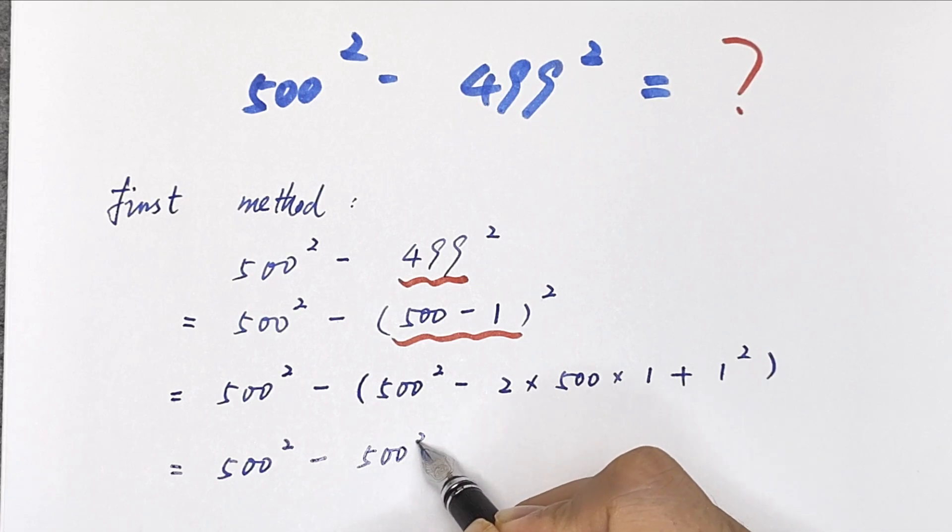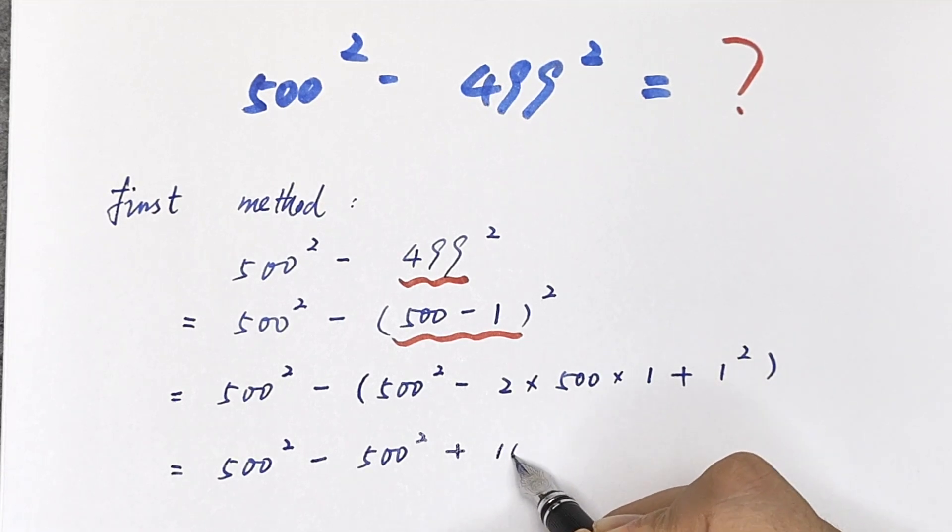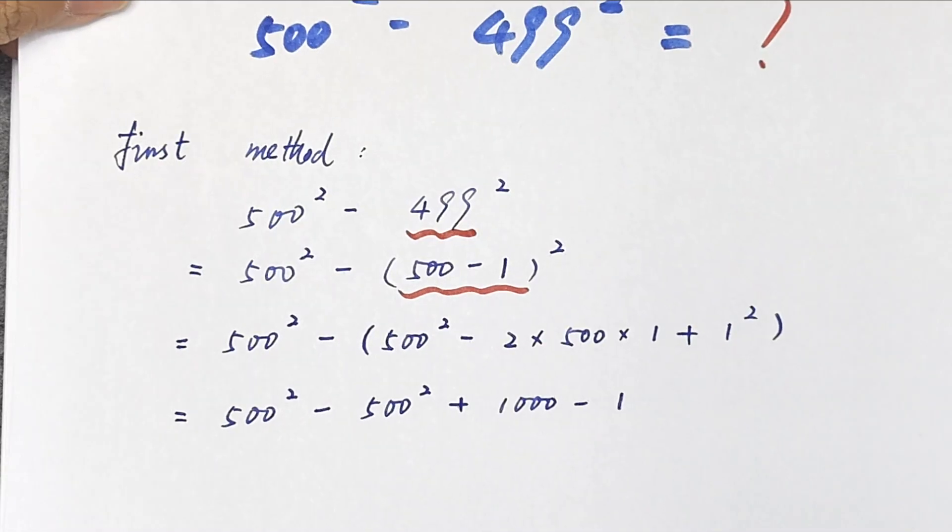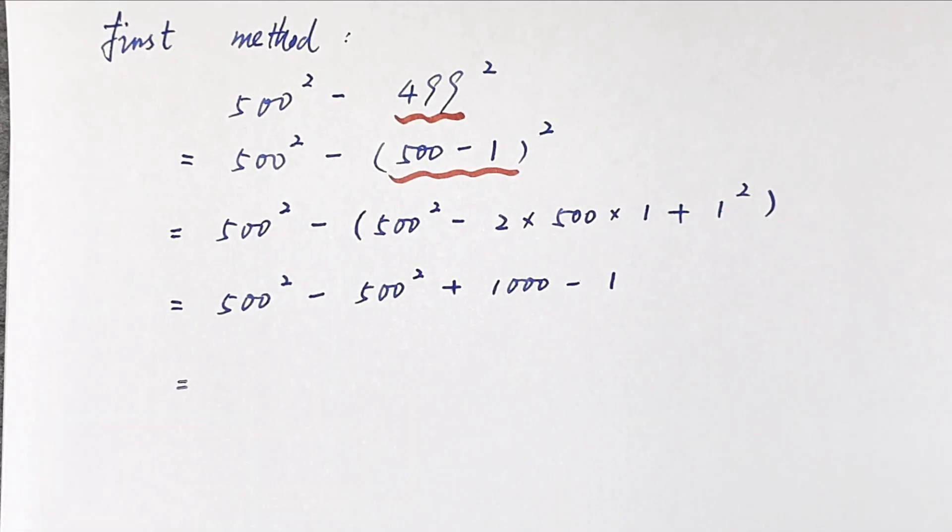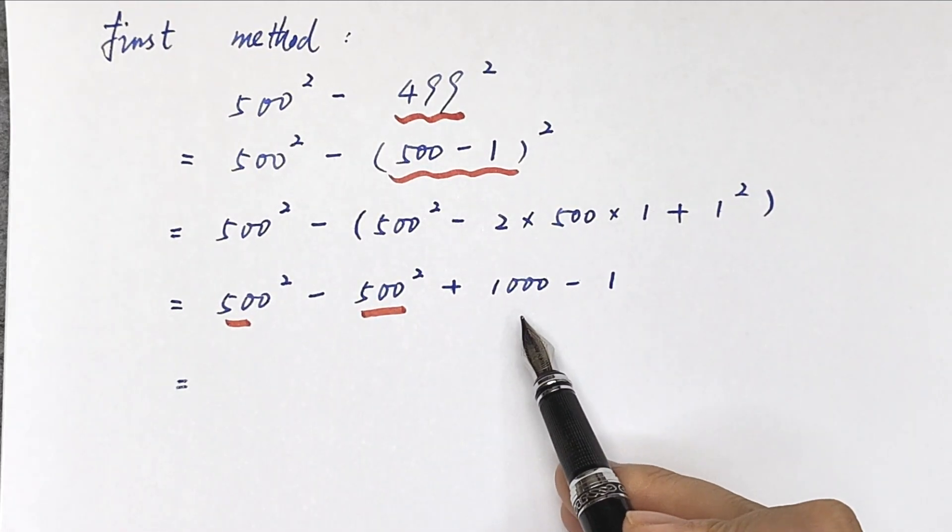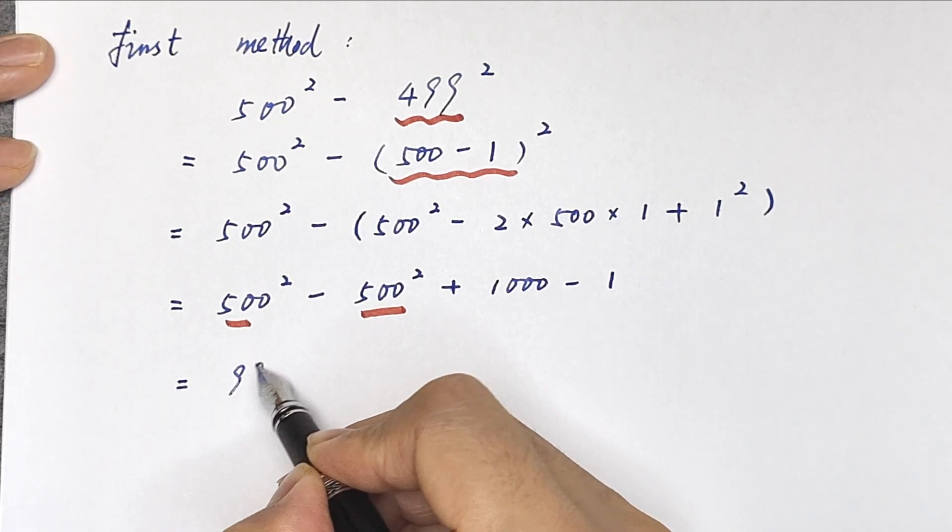500 squared plus 2 times 500 times 1 is equal to 1000 minus 1 is equal to, this minus this is 0, 1000 minus 1 is equal to 999.